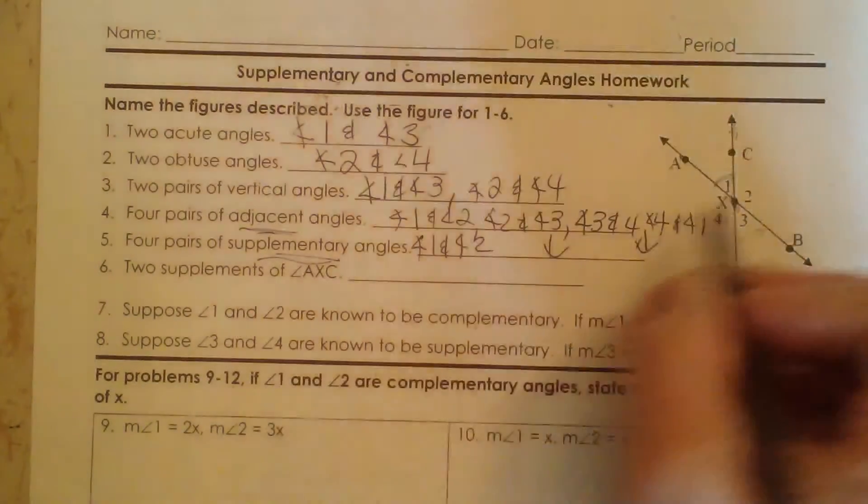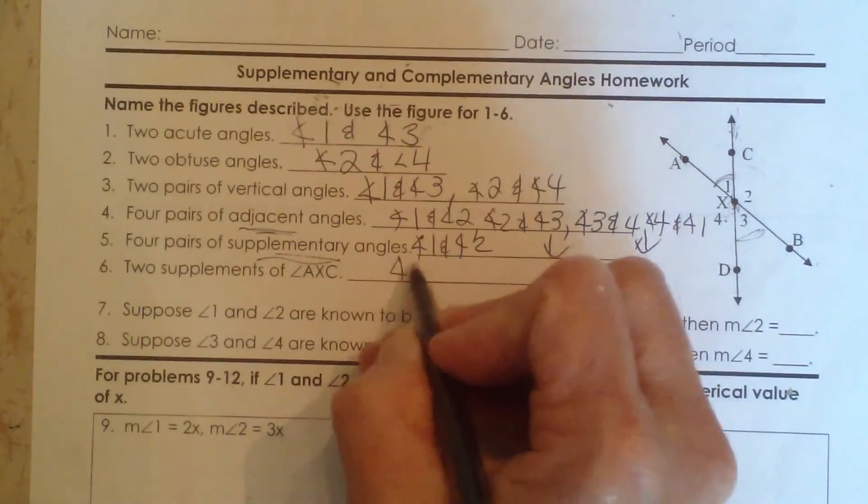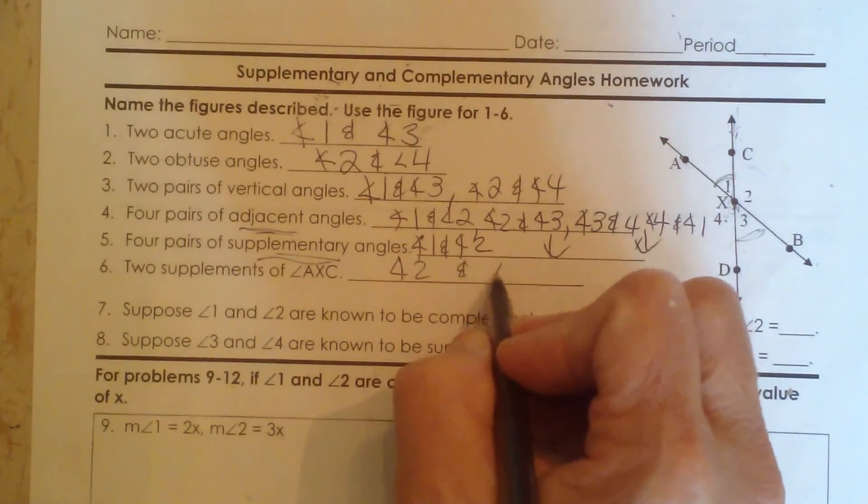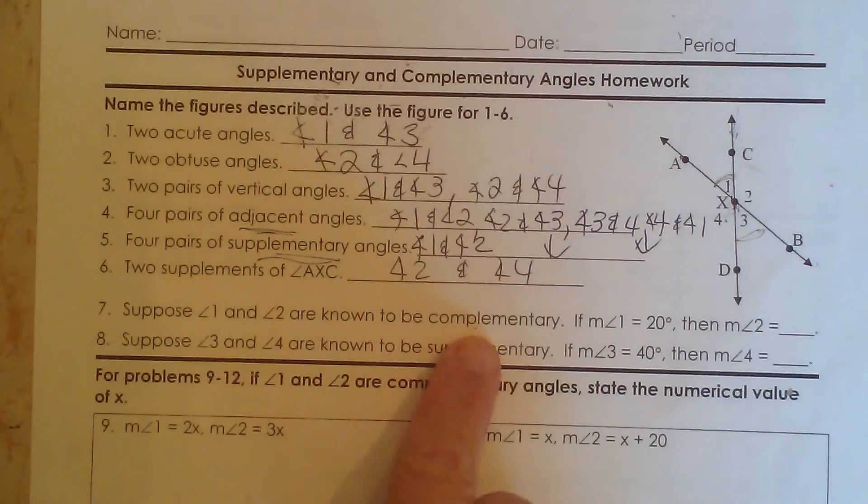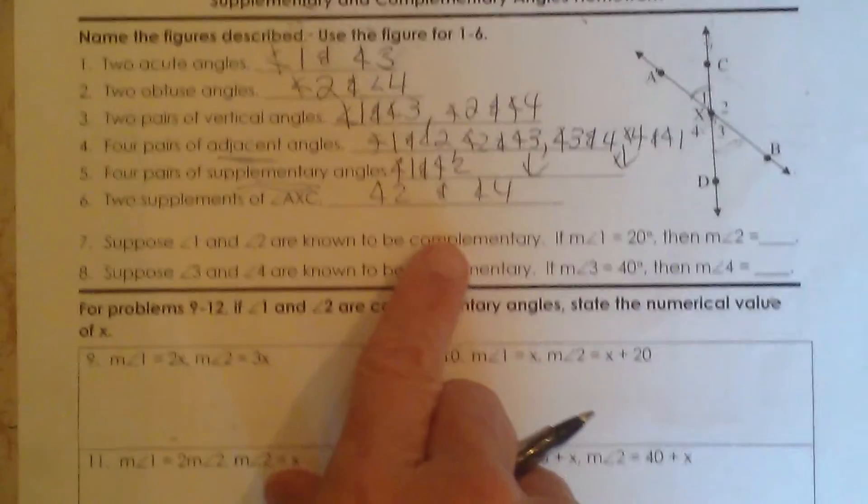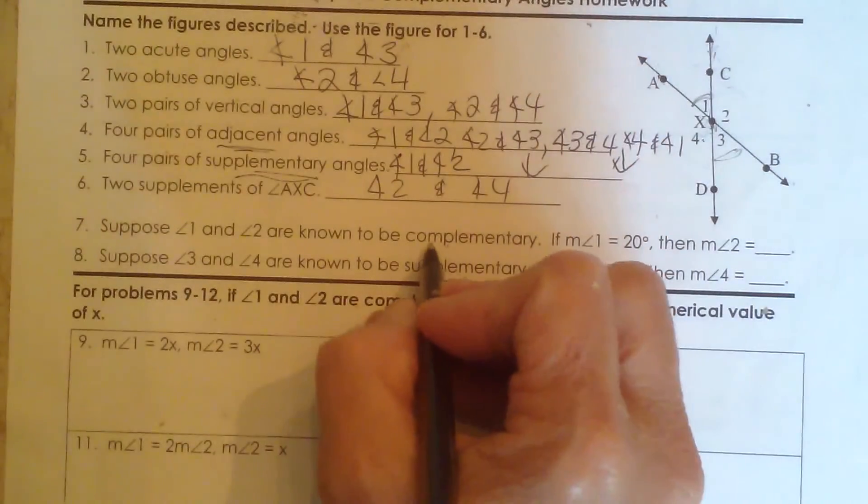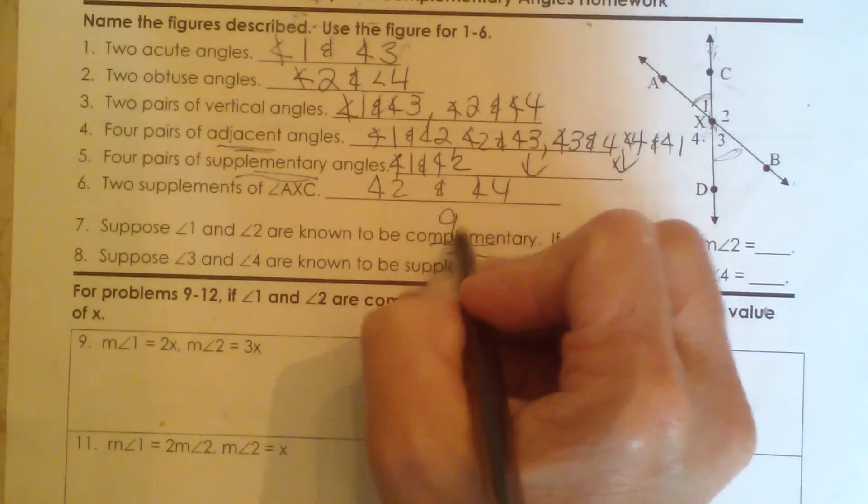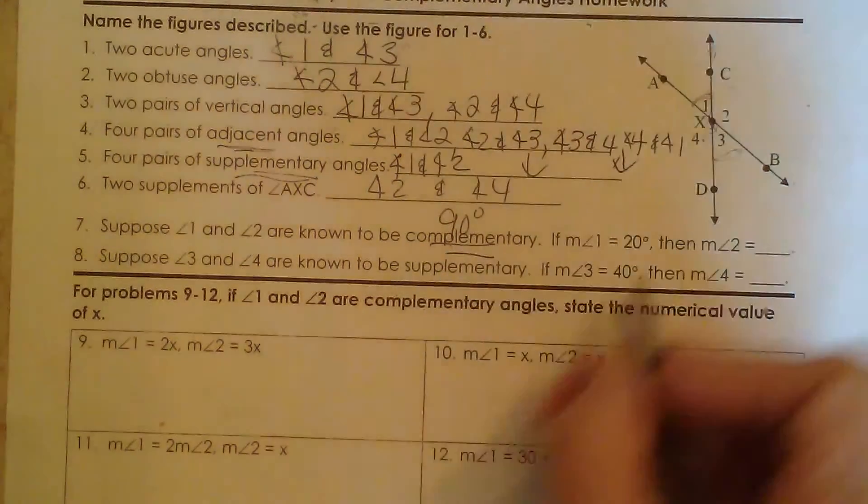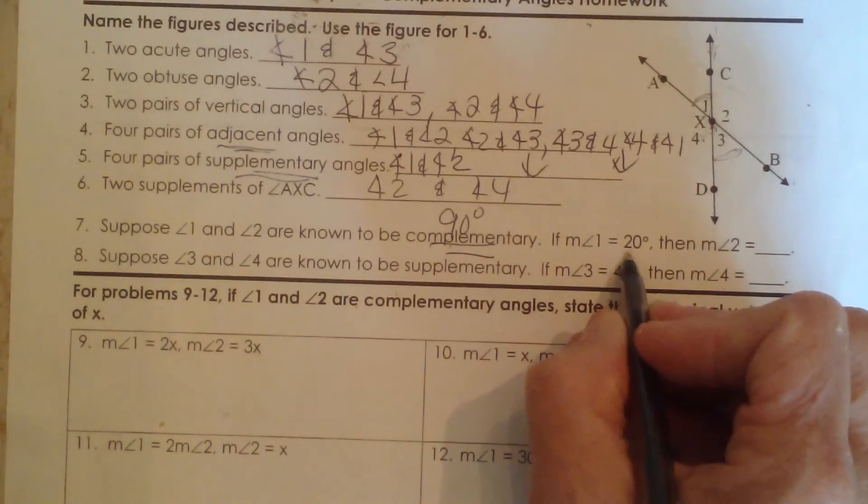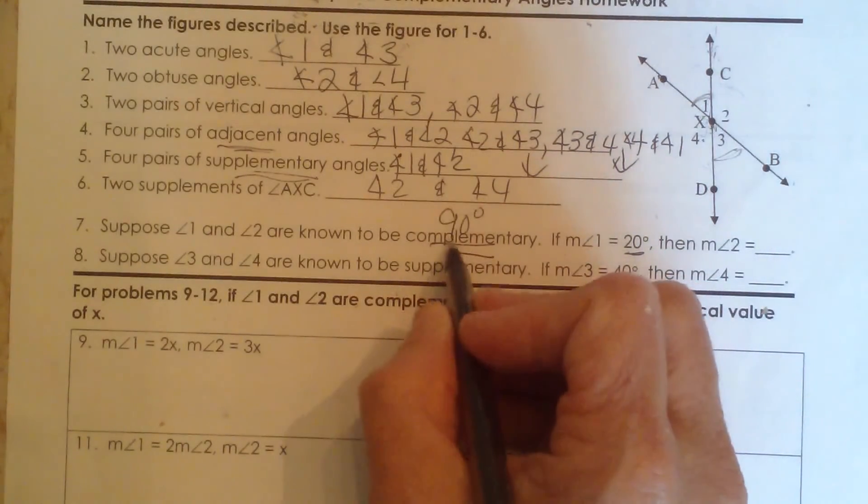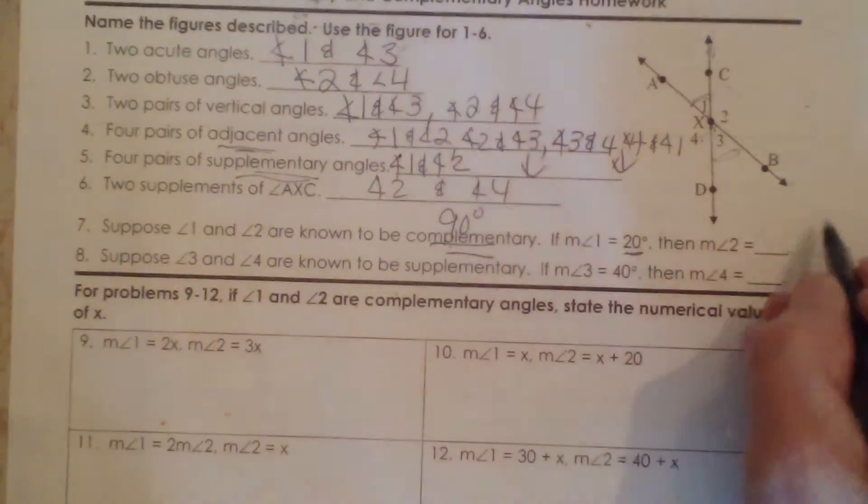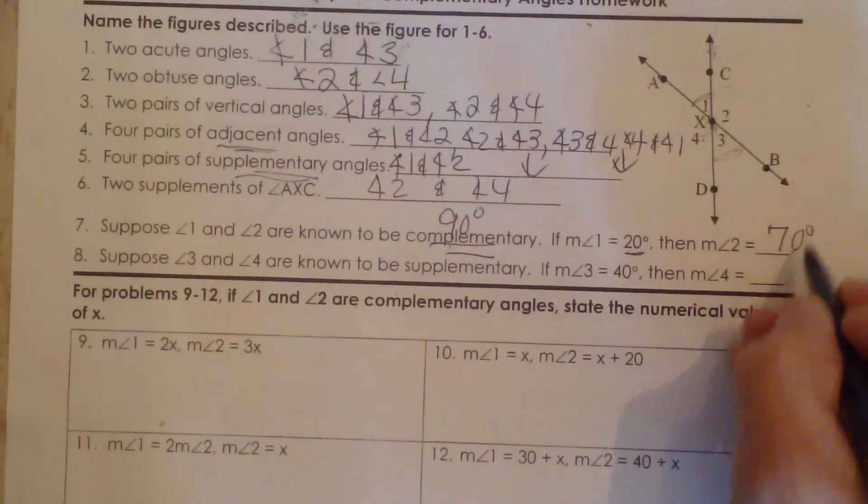Okay, so suppose angle 1 and 2 are known as complementary. Now we're redefining this and we're not looking at our diagram anymore. Two angles that are complementary have the characteristic where they add to 90 degrees. So if angle 1 is 20 and it has to add with angle 2 to equal 90 degrees, that means angle 2 must be 70 degrees, because the two have to add to 90.